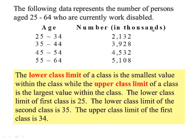The following data represents the number of persons age 25 to 64 who are currently work disabled. So we have the age and we have the number in the thousands. This would be a class, ages 25 to 34, and there's 2,132 times a thousand people. The next class would be 35 through 44, and so on and so forth.